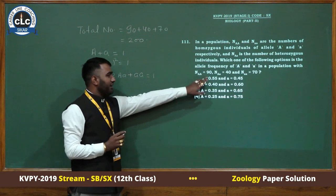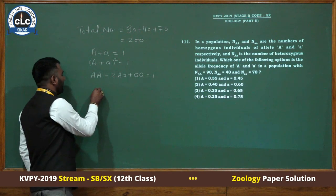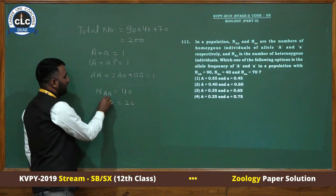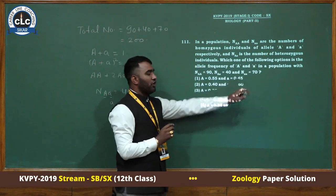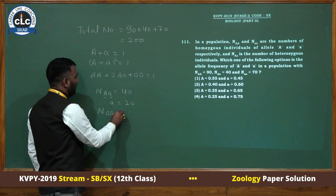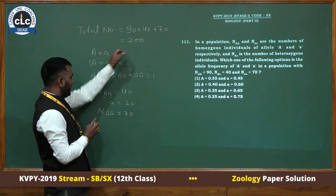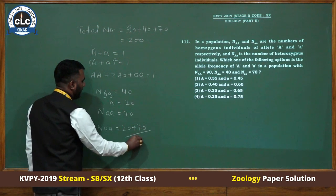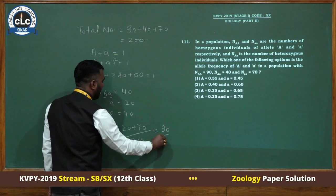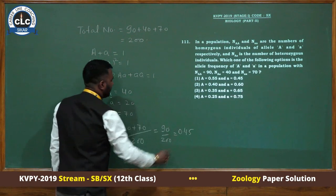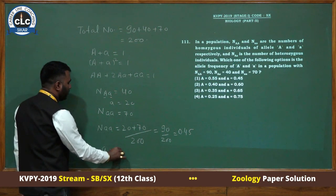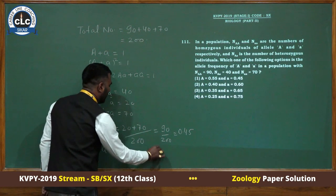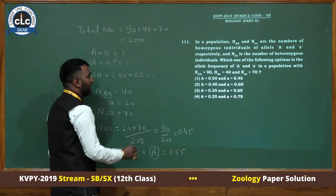Opening the equation: A squared plus 2Aa plus a squared equals 1. We have NAa equals 40, NAa equals 90, Naa equals 70. The total number of small a alleles is 40 plus 140 divided by 200, which equals 0.45. Since A plus a equals 1, capital A frequency is 0.55. The correct answer is first.